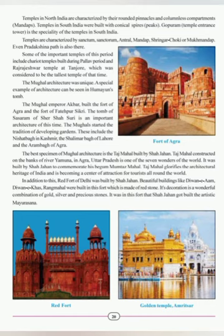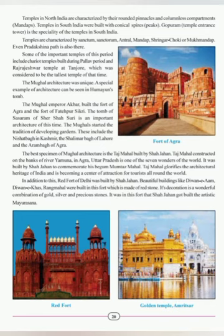Mughal architecture was unique. Humayun's tomb is a special example. Mughal Emperor Akbar built the Fort of Agra and established Fatehpur Sikri, 36 km from Agra, constructing Buland Darwaza, the palaces of Birbal and Jodhabai, Panch Mahal, the tomb of Sheikh Salim Chisti and Jami Masjid. The tomb of Sher Shah Suri at Sasaram is also significant Mughal architecture.